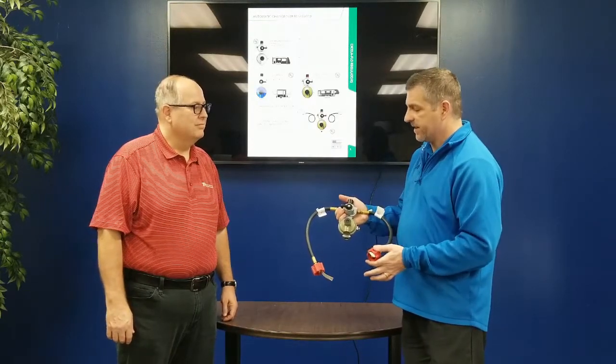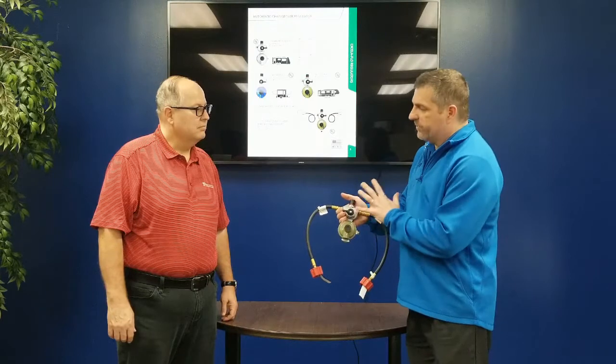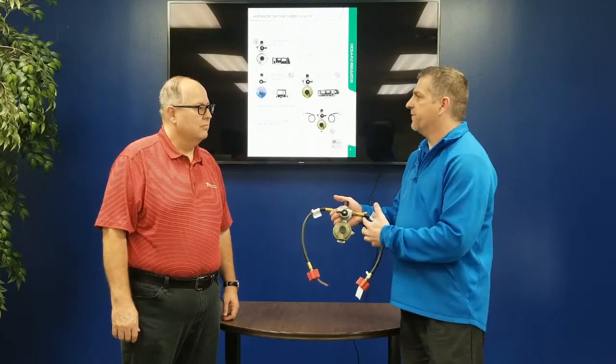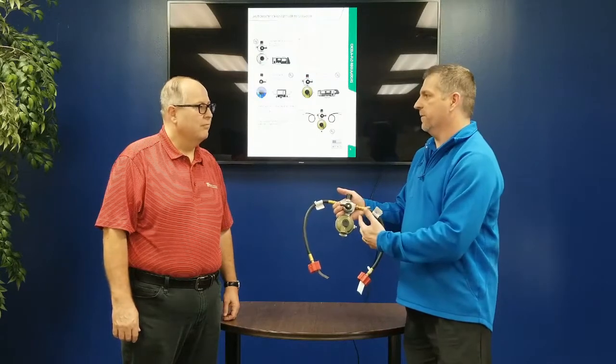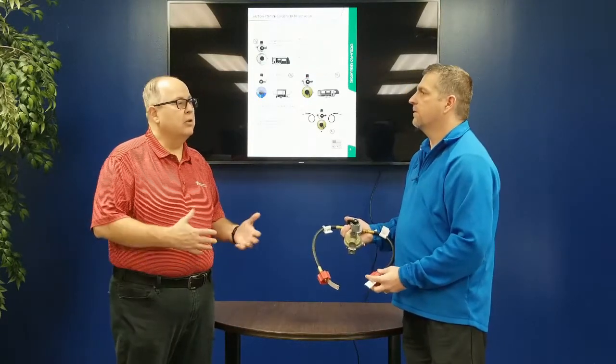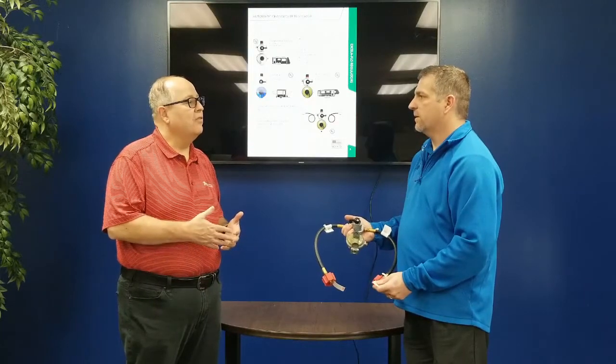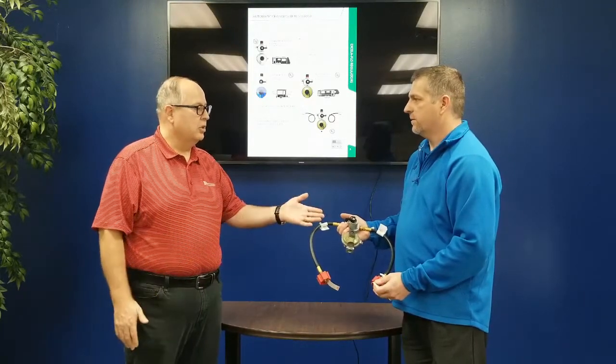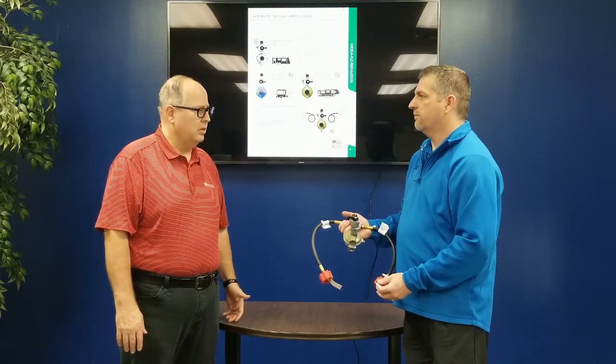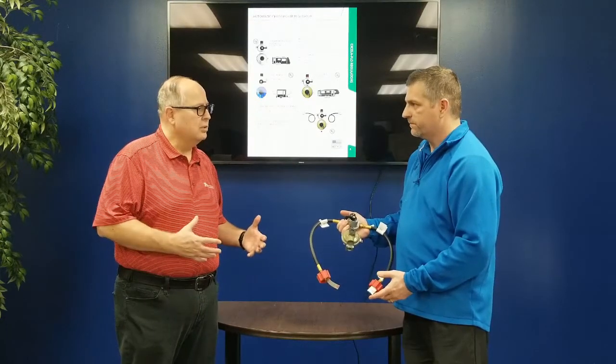Why would somebody want or need a high flow regulator? What's the difference between the silver regulator and the high flow regulator? Sure, so the green is a higher capacity. The silver regulator is rated at 225,000 BTUs, where the green is rated as high as 350,000 BTUs. So the capacity is much higher.